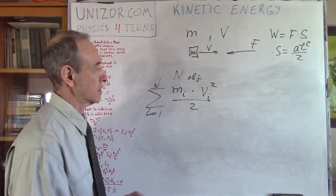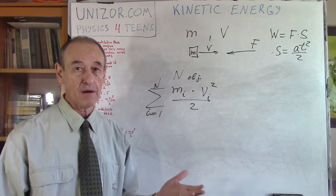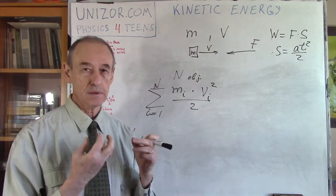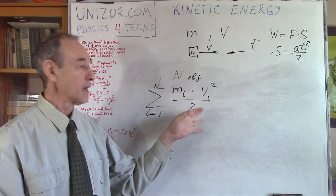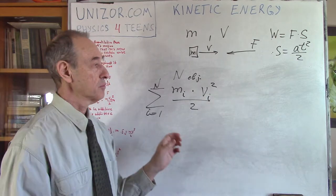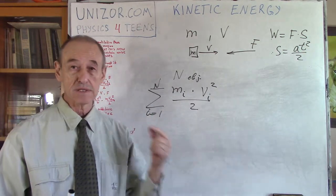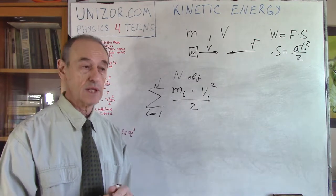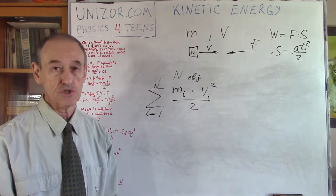I'm talking about speed here, not velocity, because direction doesn't matter for kinetic energy. Speed is a scalar. Even if the trajectory is a curve, each infinitesimal piece can be treated as straight motion, and at that moment you can calculate the kinetic energy. As the speed changes along the curve, the kinetic energy changes correspondingly.